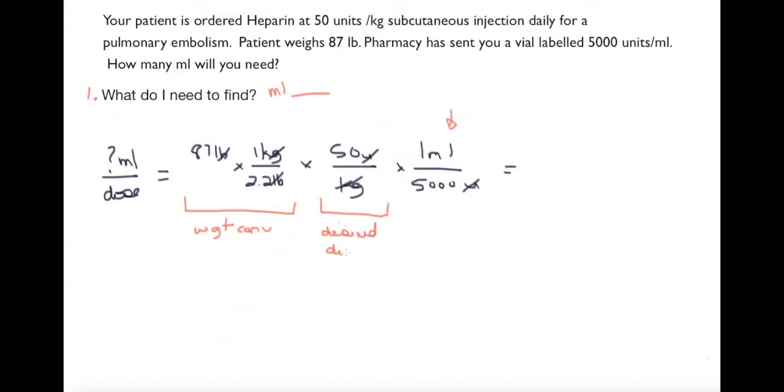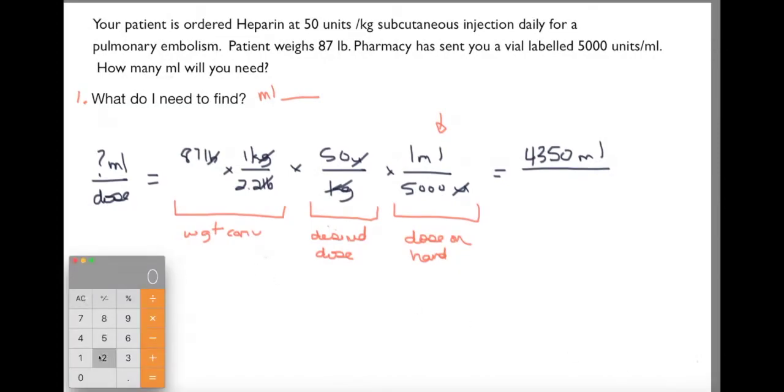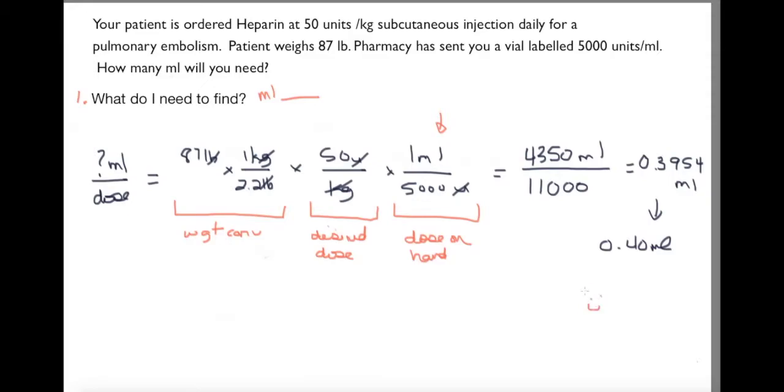I can see that my weight conversion, my desired dose, and my dose available. Now I've crossed off all the units I can, I'm left with mils. I can now solve: 87 times 1 times 50 is equal to 4,350 mils, and on the bottom 2.2 times by 5,000 is equal to 11,000. When I further factor this out I get 0.3954 mls, which will round up to 0.4.